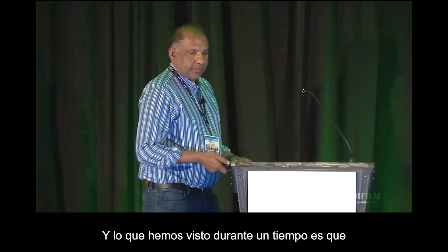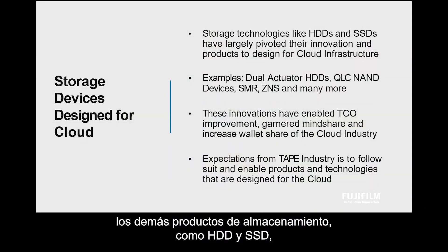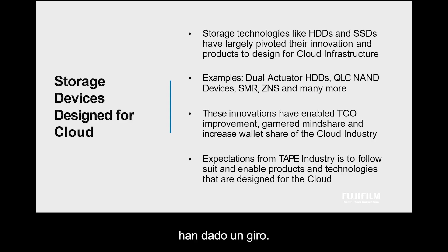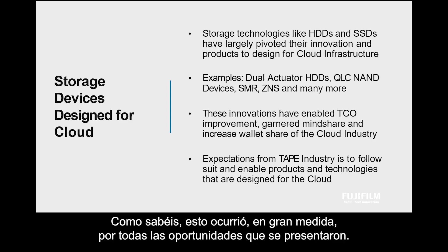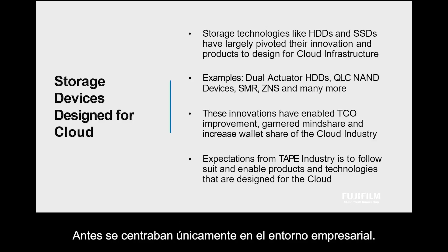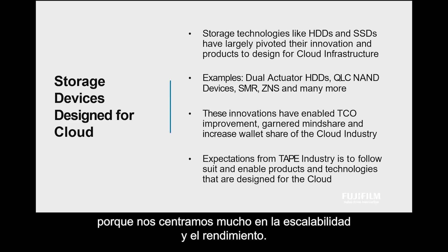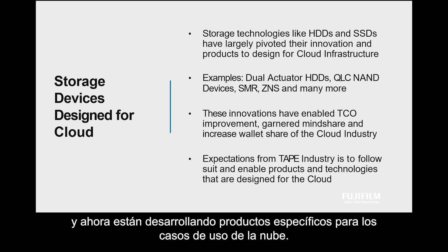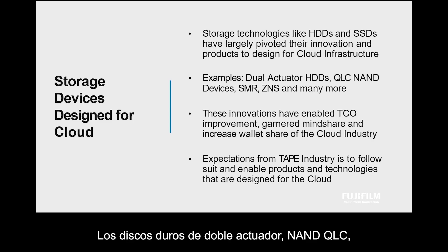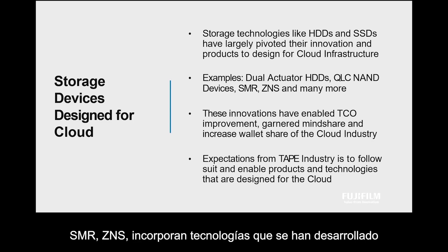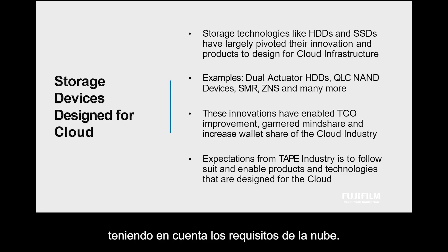What we have seen over a period of time is that other storage products like HDD and SSD have made the pivot. They were focused on the enterprise only, but the cloud use cases are different — we have a large focus on scalability and performance. These products have made that pivot, and they are now developing products specifically for cloud use cases. Things like dual actuator HDDs, QLC NAND, SMR, and ZNS — these kinds of technologies are being developed with cloud requirements in mind.